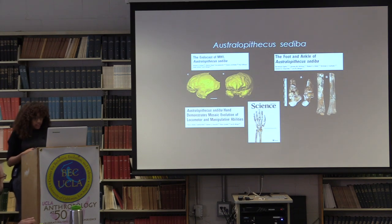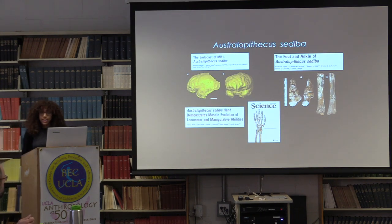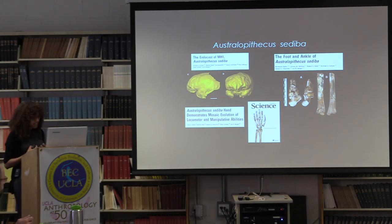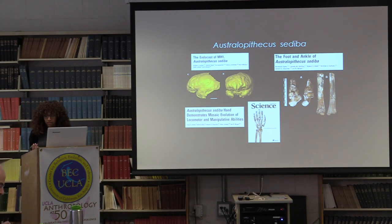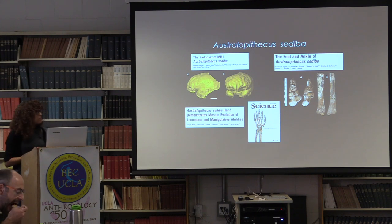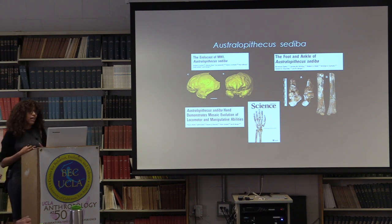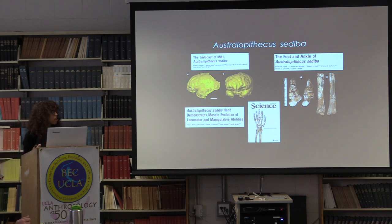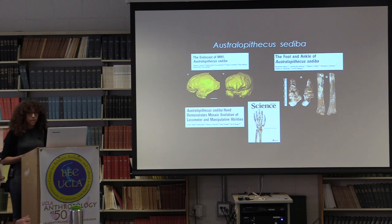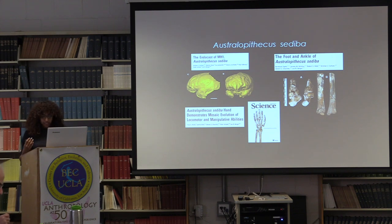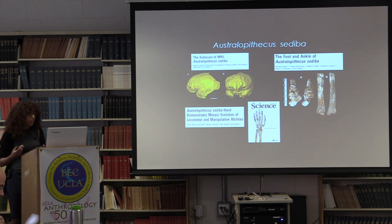There have been a number of articles published in Science since then, including analyses and descriptions of the foot, locomotion and gait, lower limb, pelvis, thorax, upper limb, hand, mandible, as well as the endocast brain of sediba, all providing a complete but rather complex picture of the species' anatomy. The authors of the endocast paper used cutting-edge 3D scanning technology to produce a digital endocast of the juvenile skull, which showed an unexpected complex brain structure for such a small cranial capacity.